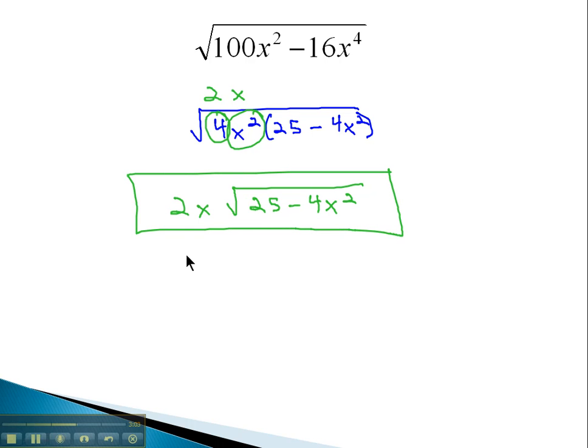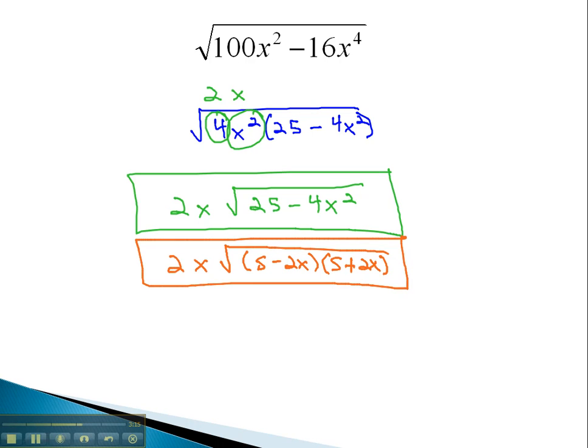Again, if you had factored the difference of squares, you would have the equivalent expression, 5 minus 2x times 5 plus 2x, and both of these answers would work for the correct answer on this problem.